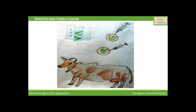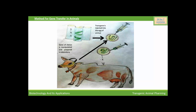DNA containing the desired gene is identified and cloned before insertion into the animal host. The host animal — that may be cow, pig, sheep, or any other animal — is induced to superovulate and their eggs are collected. These eggs are fertilized in a laboratory dish using a fine hollow needle, and a solution of DNA containing the transgene is injected into the male pronucleus of the fertilized egg before it fuses with the female pronucleus. The transgenic embryos are grown in cell culture and then implanted into the uterus of a surrogate mother, where they complete their development. Finally, screening is performed to determine which of the offspring have inherited the transgene.